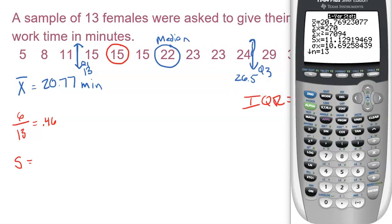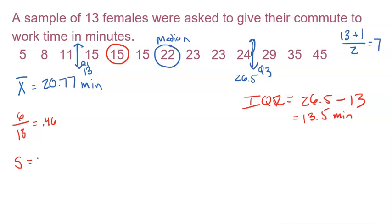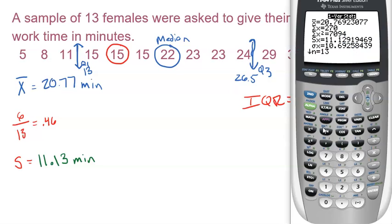Now lots of numbers on the screen but I'm going to tell you all the ones you need. First, the top X bar is the mean, 20.77. Now the mean's not hard to do by hand but we'll save you the time. And then go down a little bit, ignore all this other crap, and go down to the S. There's your standard deviation. Standard deviation, 11.13. So I'm going to come back here and write that down real quick, 11.13 minutes. All statistics are in the same unit as everything else in your problems, all in minutes here.